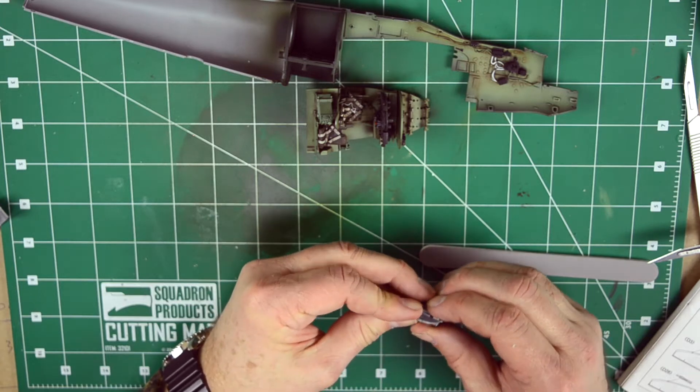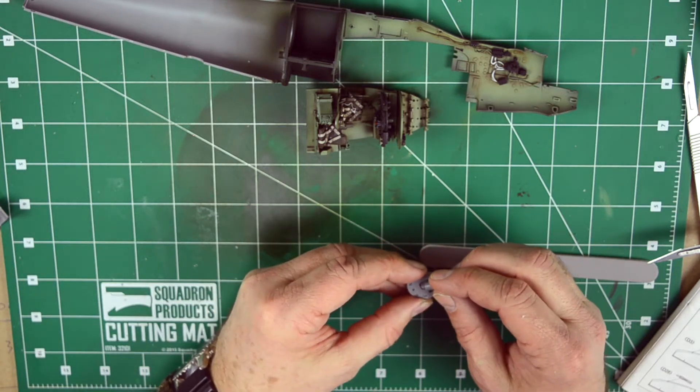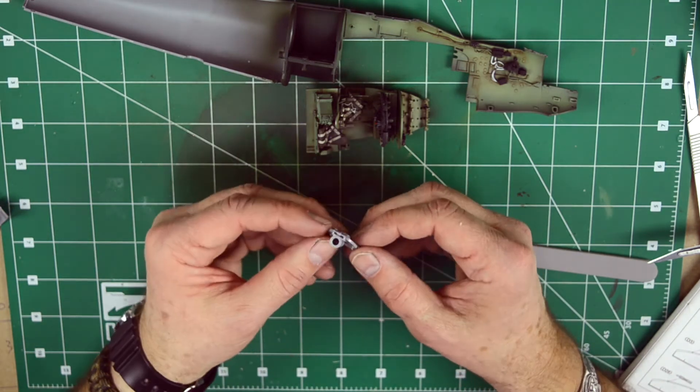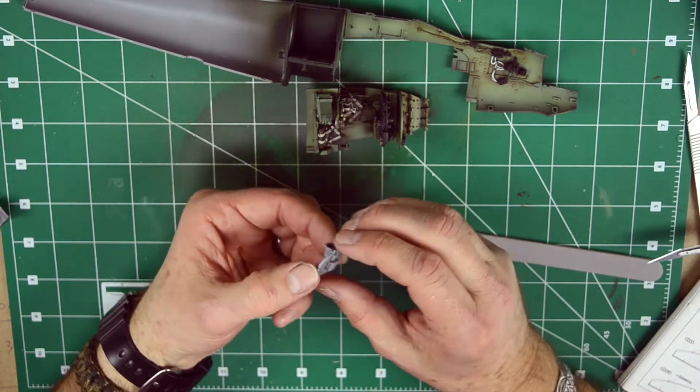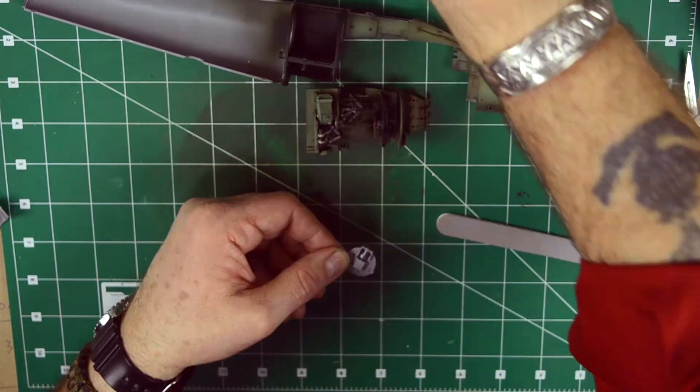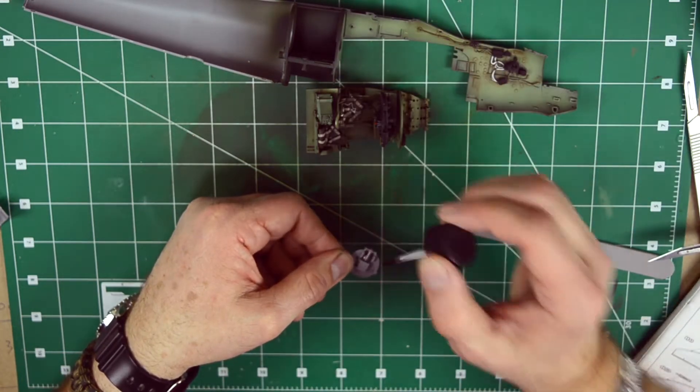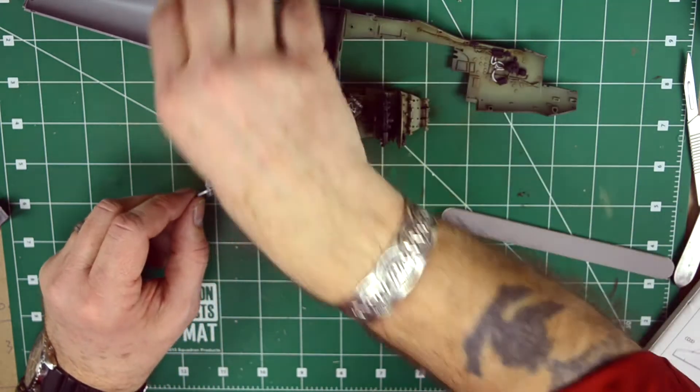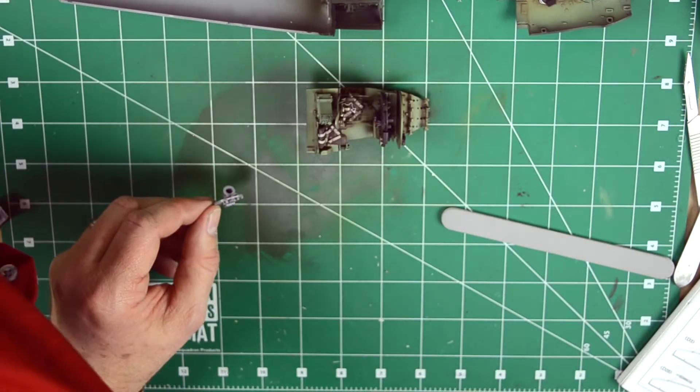I'm assembling the tail wheel housing and bulkhead. It's a little tricky. Okay, let's put that in place.